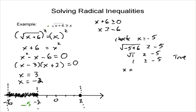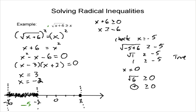Now let's check a number between negative 2 and 0. We'll look at our radical to see if we can pick a number that makes it a perfect square, but we're not going to be able to do that here, so let's just pick 0. When we put 0 in, we get the square root of 6. Is that greater than or equal to 0? We don't know the exact value of the square root of 6, but we know it's going to be a positive number — so yes, it's definitely greater than or equal to 0. That region is included.